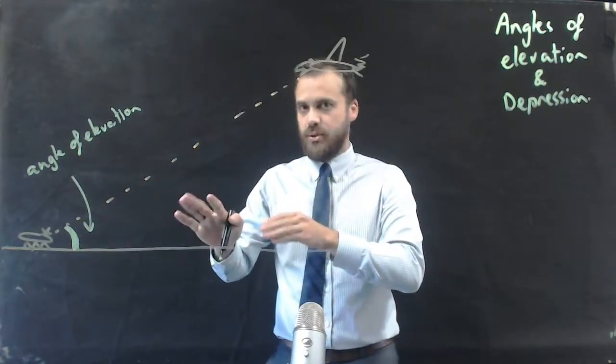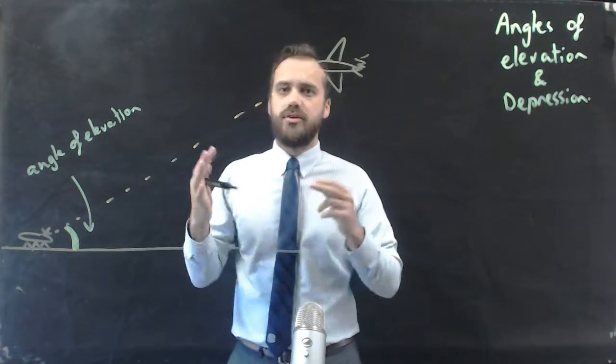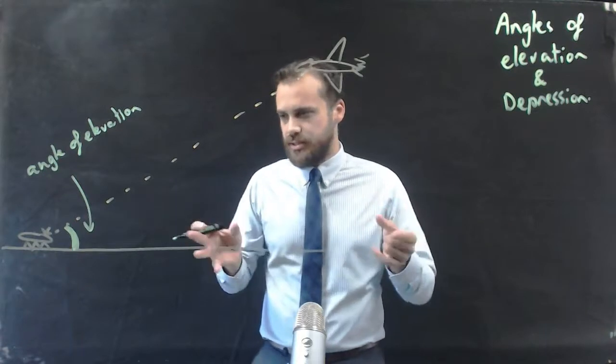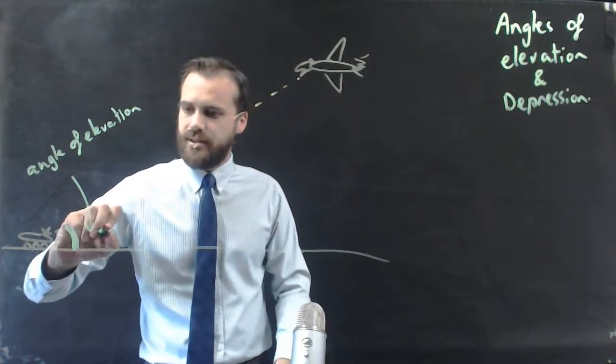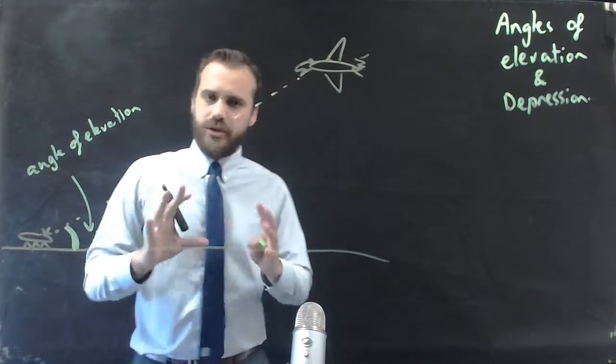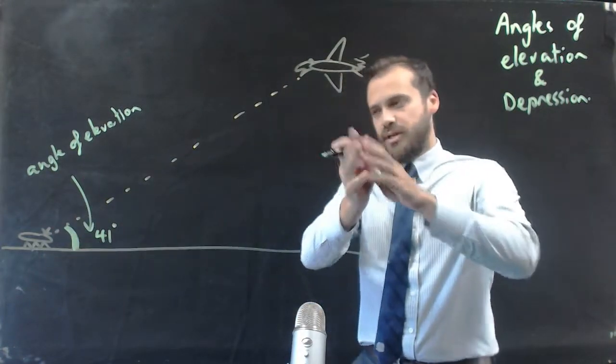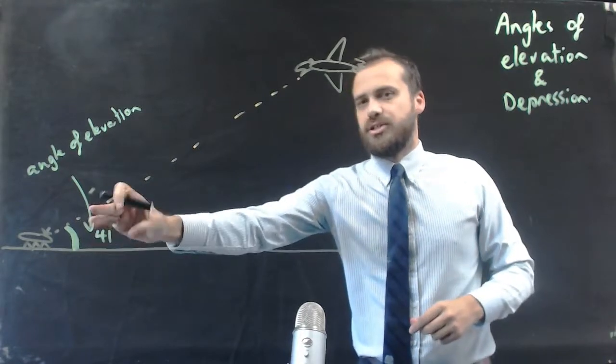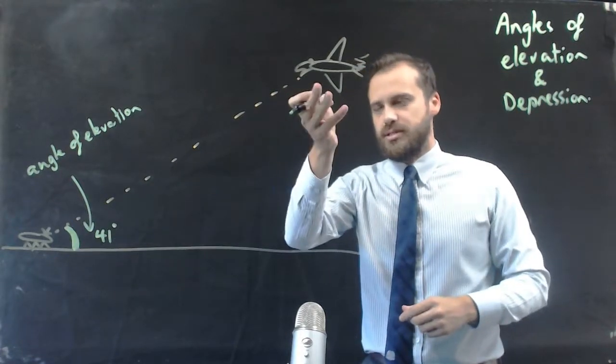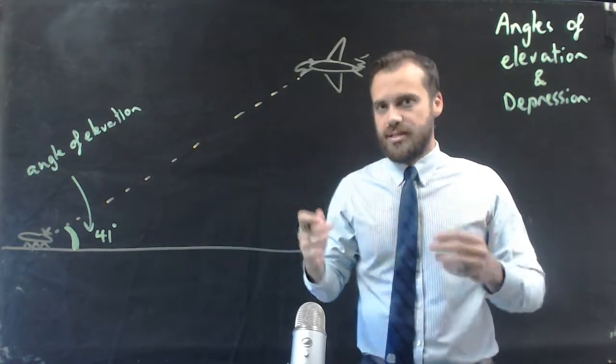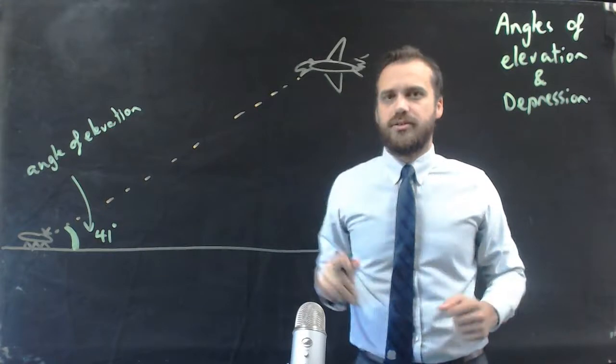And that's the bit of this question that people find really easy. So if I was to say this in a sentence, let's give it a number, let's say that's 41 degrees. What I could say is the ant sees the bird at an angle of elevation of 41 degrees. That's the ant looking at the bird.